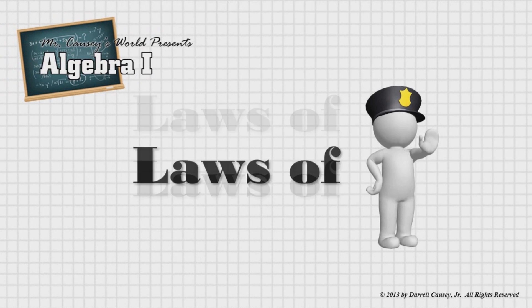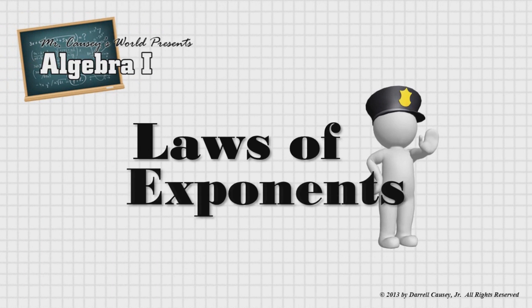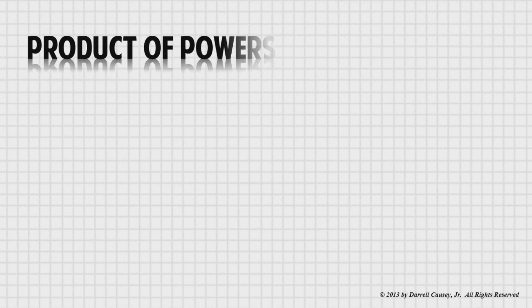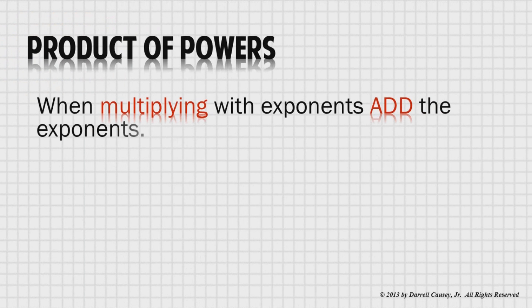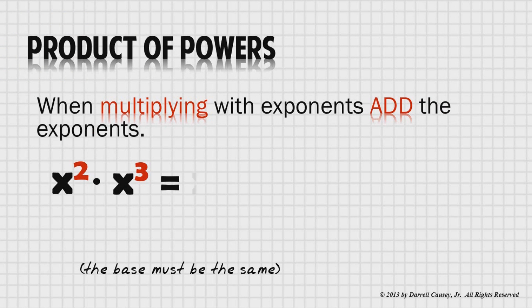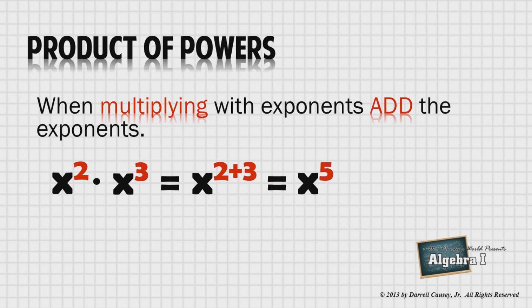Now for the laws of exponents. The product of powers. When multiplying with exponents add the exponents. So we see we have x squared times x cubed. 2 plus 3 is 5, and so the answer is x to the fifth power. We add the exponents.